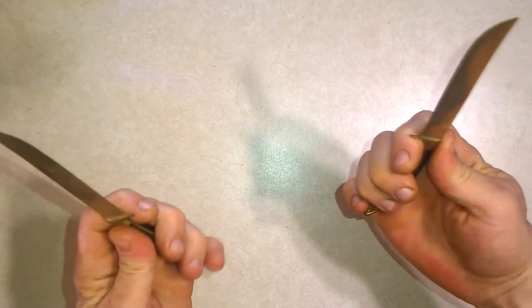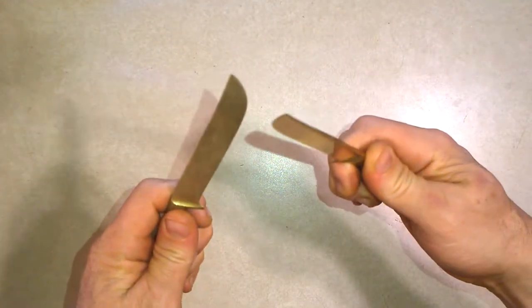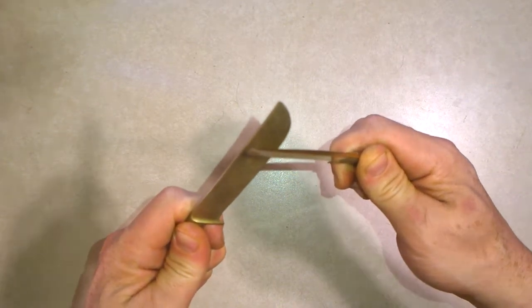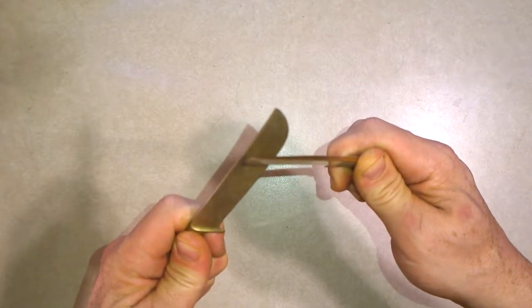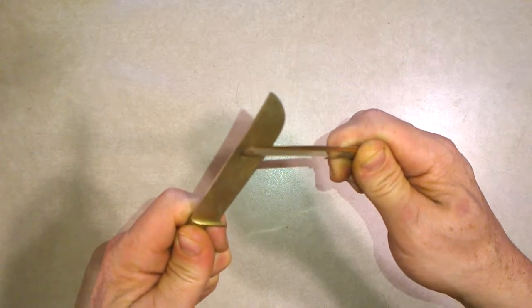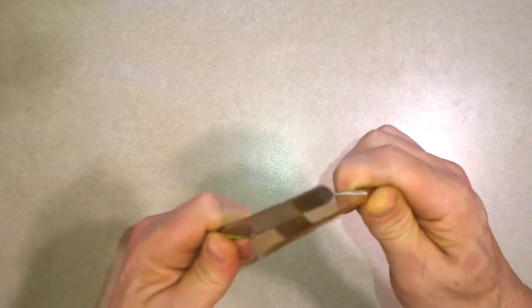When the weapons come into contact, it's usually the bevel of the edge that meets the other bevel of the edge. And so the actual cutting part of the edges rarely ever actually come into contact.